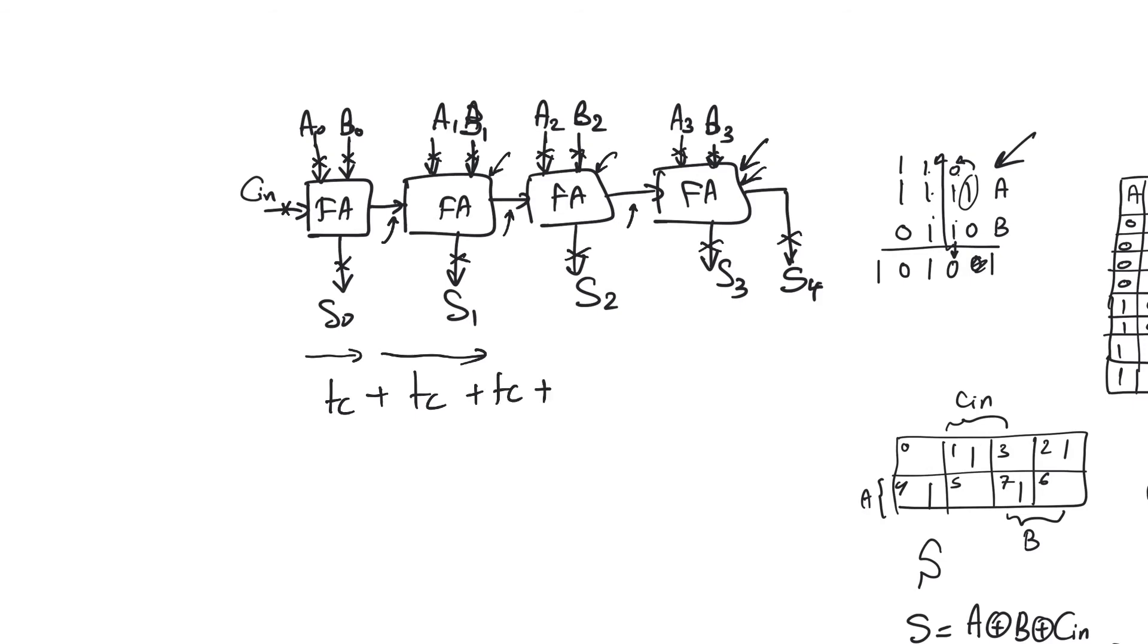Once we've reached the final adder, the final adder is producing two outputs, S3 and S4. S4 is a carry-out, and S3 is an actual sum. Because a sum is greater than a carry, then we will use T sum. Therefore, the delay here is 3 T carry plus T sum. And in general, for an n-bit adder, we can conclude that it will be (n-1) T carry plus T sum.